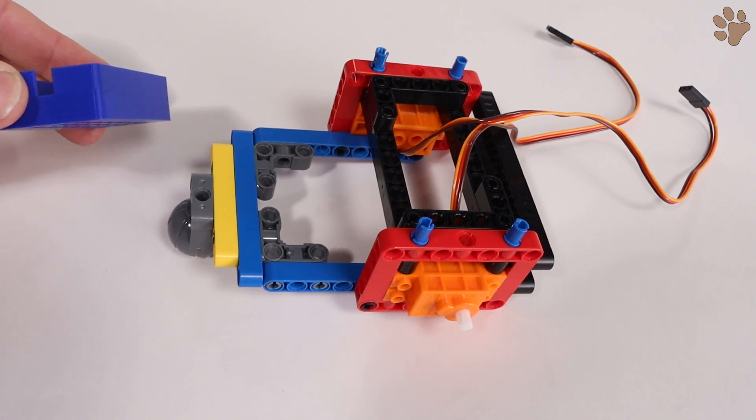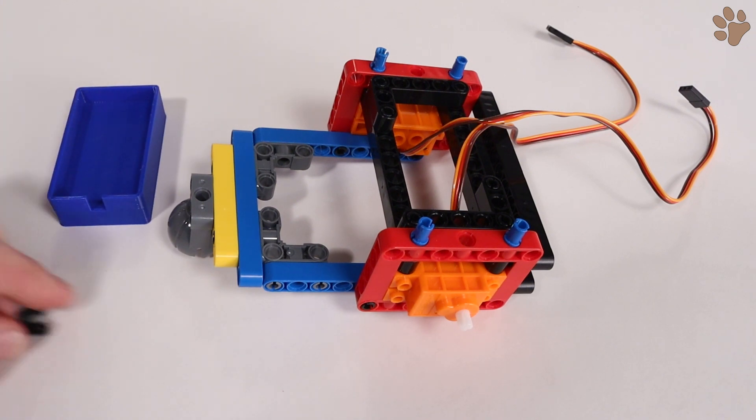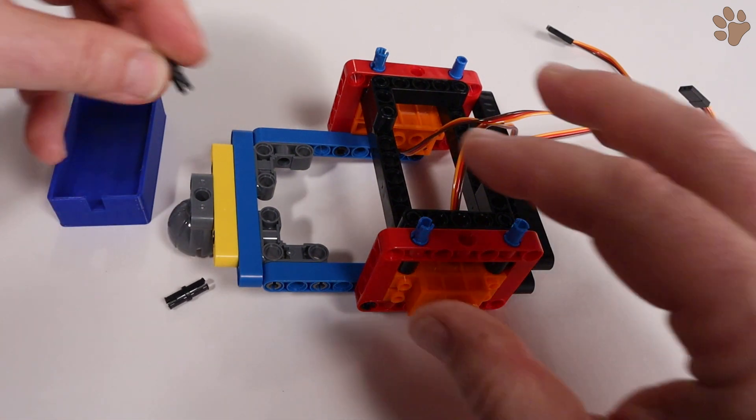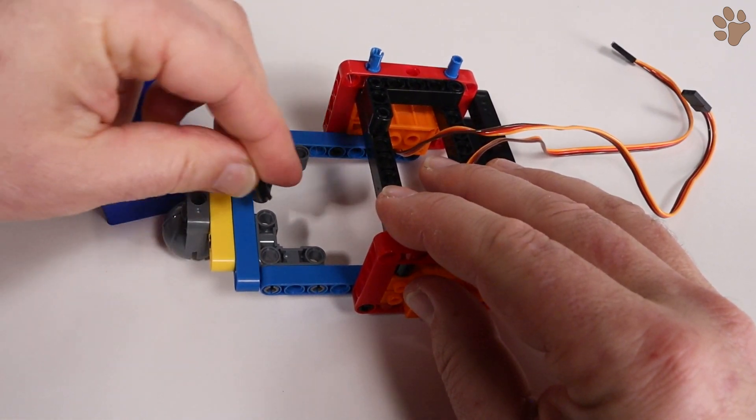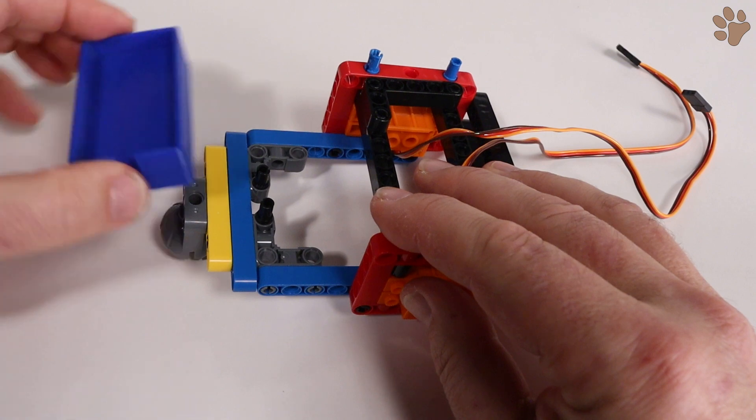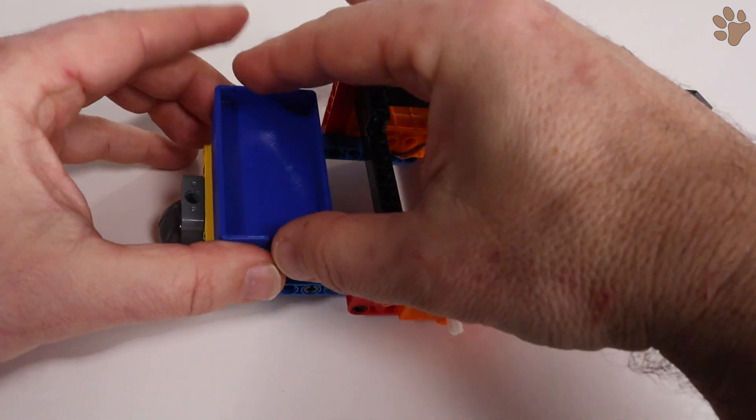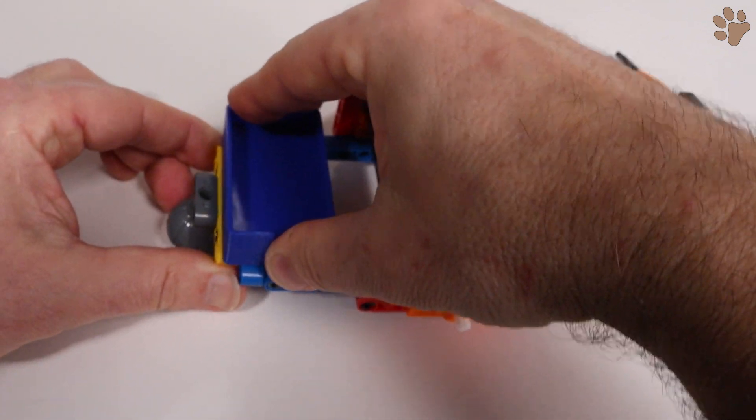Next up, we'll add the battery holder. You'll need two pins to attach the battery holder. Place two pins into the 90 degree connectors facing upwards. Then add the battery holder by centering it and pressing it down onto the pins.